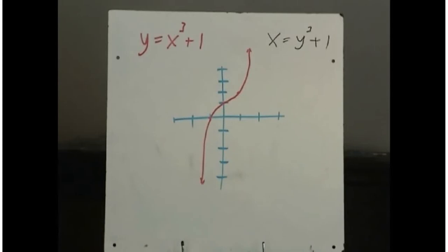And this is such a common operation that there's a special name attached to a function when you switch the x and y value, and it's called the inverse. So switching x and y is called the inverse of a function.